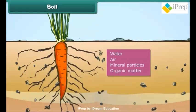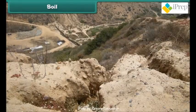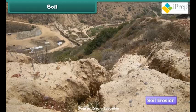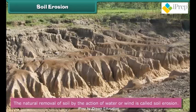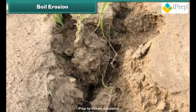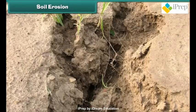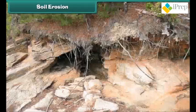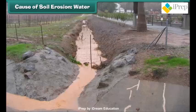Soil serves as a natural medium for the growth of plants. Most soils contain four basic components: water, air, mineral particles, and organic matter. But the fertility of soil has decreased significantly, mainly because of soil erosion. The natural removal of soil by the action of water or wind is called soil erosion. The disappearance of the topmost surface and large ditches in the ground are the signs of soil erosion.